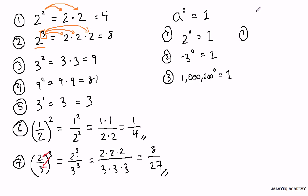Anything to the first power is itself. So 2 to the first power is 2, negative 3 to the first power is negative 3, and 1 million to the first power is, you guessed it, 1 million.